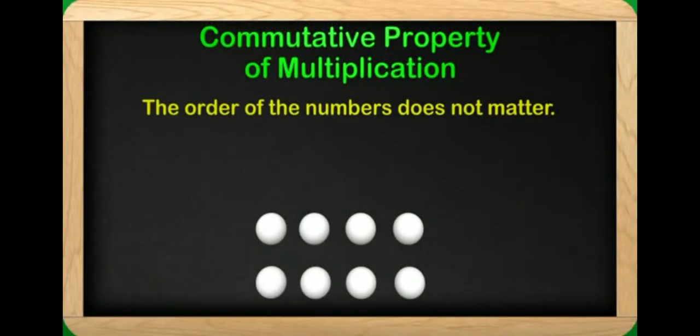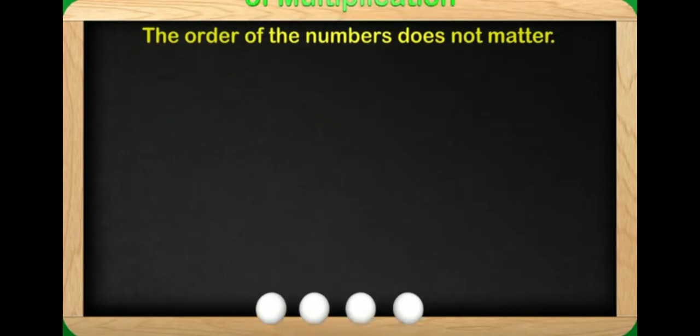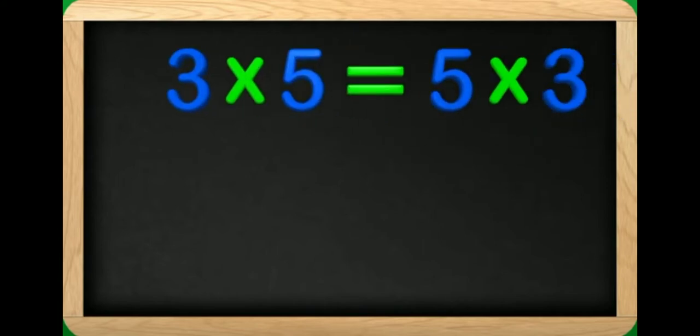Good morning student. Let us see the commutative property of multiplication. Commutative property, here the order of the numbers does not matter.